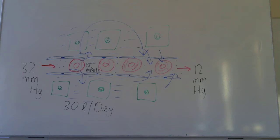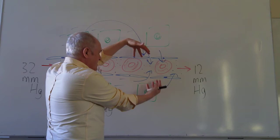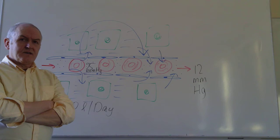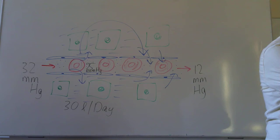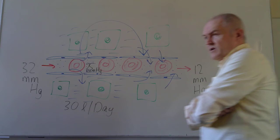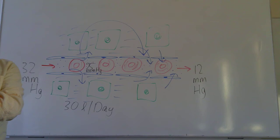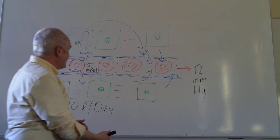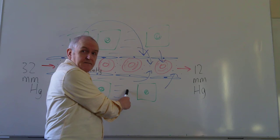About 30 litres of tissue fluid is formed per day. The vast majority — about 90% — goes back into the capillaries. But that still leaves three litres a day of tissue fluid which is formed but is not osmotically moved back into the venous end of the capillaries. Three litres a day is quite a lot. About three litres of this 30 litres is not reabsorbed — it's left in the tissue spaces.